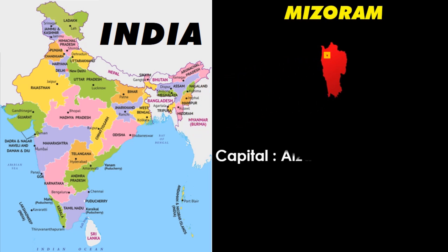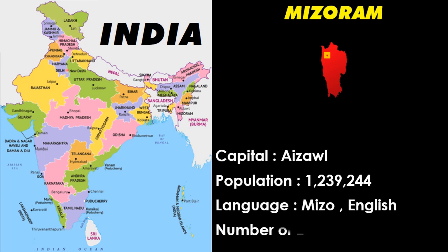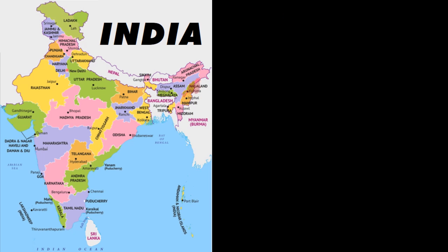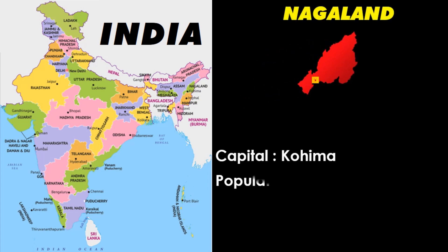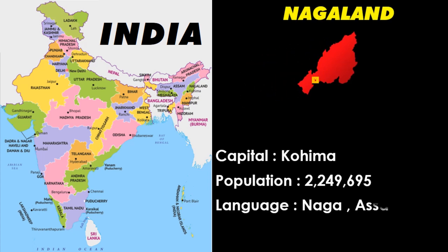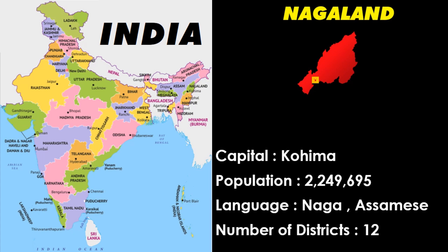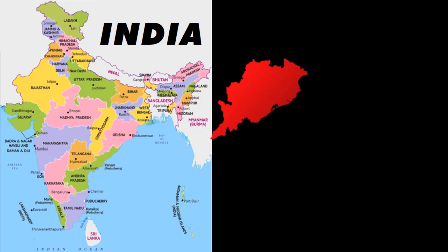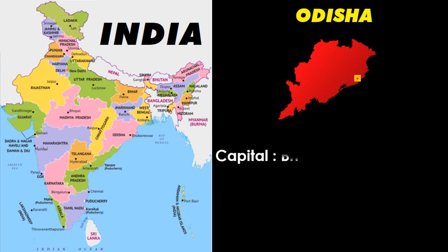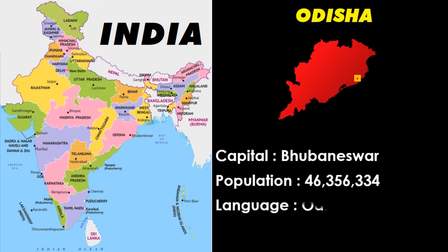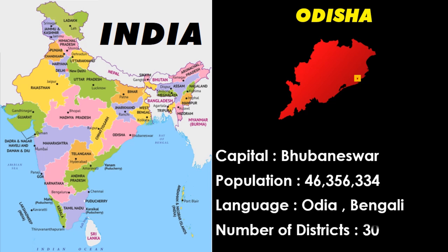Mizoram: capital Aizawl, language Mizo and English. Nagaland: capital Kohima, language Naga and Assamese. Odisha: capital Bhubaneswar, language Odia and Bengali.